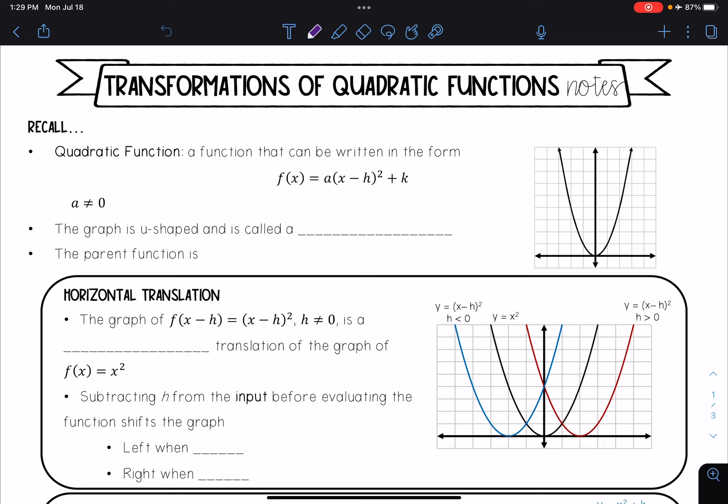Another point with quadratic functions is that the graph is u-shaped and is called a parabola. As we talked about in our last unit, the parent function of a quadratic function is f(x) = x². That is the most basic function in the quadratic function family.